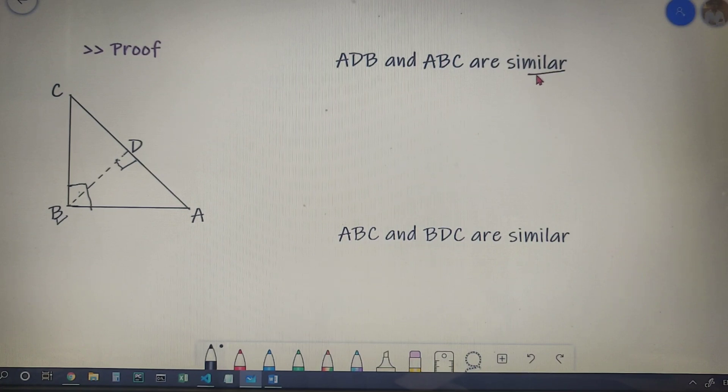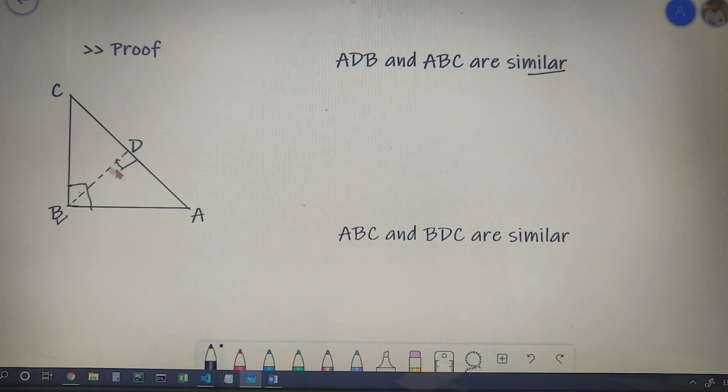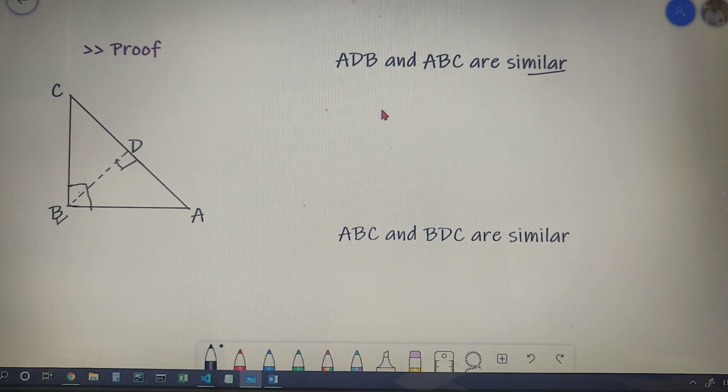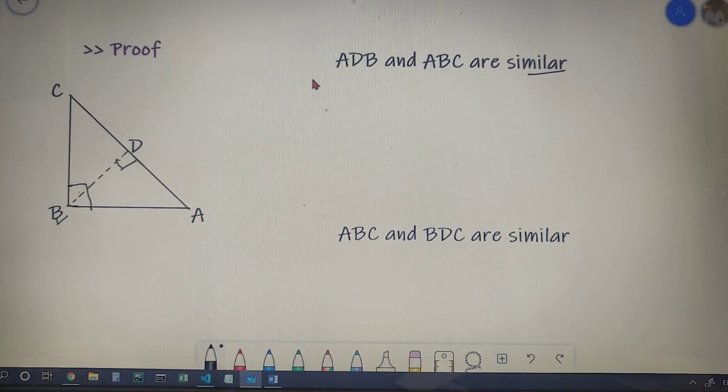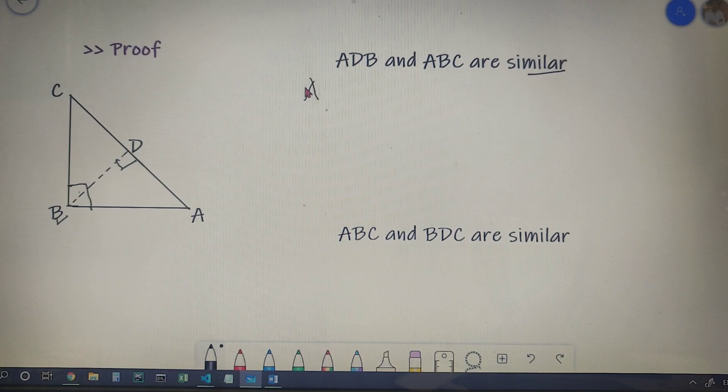If you don't know what are similar triangles, let me explain it to you briefly. If two triangles have the sides in ratio and they have an angle in common between them, then the triangles are similar to each other. So by the similar triangle property, I can say that AD by AB is equal to AB by AC.